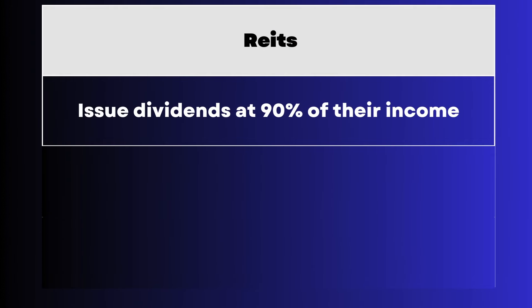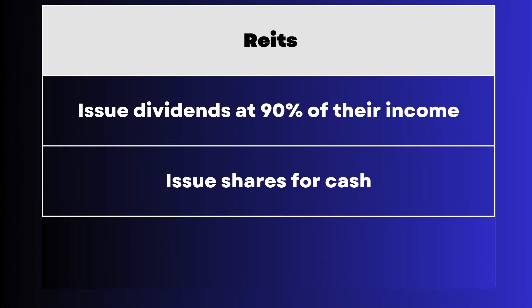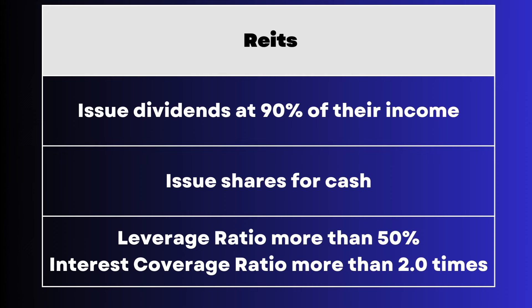However, this also means that it's hard for them to accumulate cash for rainy days. If they need cash, they will need to either issue shares to the market, which will dilute your shares, or take on more debts. Because of the nature of operation of REITs, the government has set a law where there must be a buffer zone so REITs do not over-leverage themselves. There are two main requirements: first, the leverage ratio must be below 50% at all times; and second, the interest coverage ratio must be more than 2.0 times. If they cross these standards, they will not be able to give dividends and will get taxed. Moreover, they will be forced to sell assets to bring down the leverage ratio, which will definitely crash the REIT's share price.